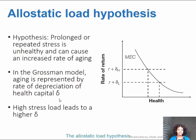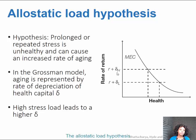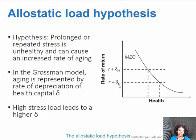So a higher stress load leads to a higher delta. The cost of investing in health includes R, the rate of return representing the opportunity cost, and delta, the rate of depreciation. The benefits of an additional investment in health have to outweigh these two costs. So when the cost is higher, H star is going to be lower. But when delta is lower, the costs of investing in health are lower, and you are able to reach a higher level of health.